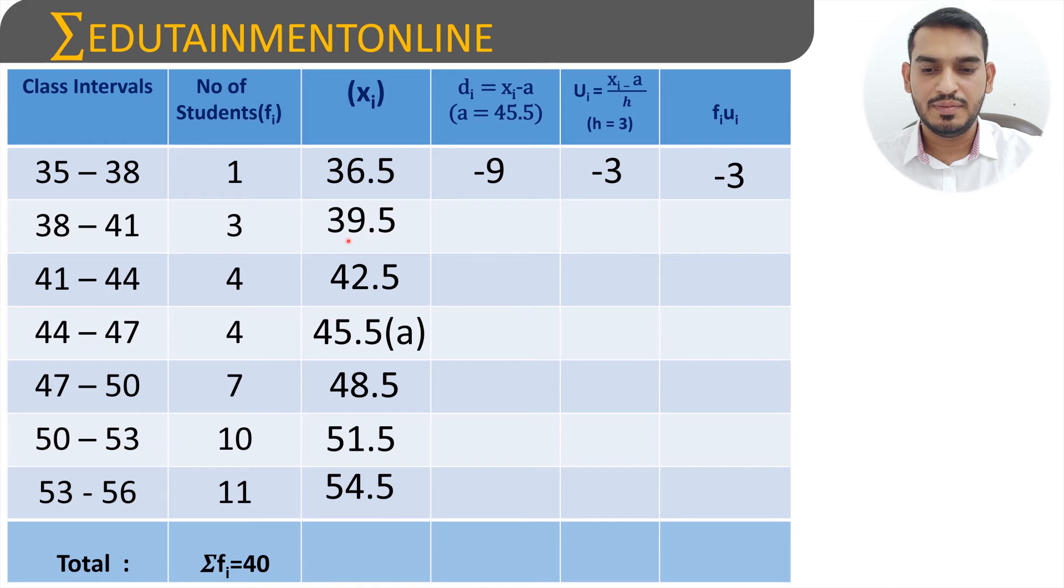Now for the second term, 39.5 minus 45.5 is minus 6, minus 6 divided by 3 is minus 2, minus 2 times of 3 is minus 6. Now 42.5 minus 45.5 is minus 3, minus 3 divided by 3 is minus 1, minus 1 times of 4 is minus 4.